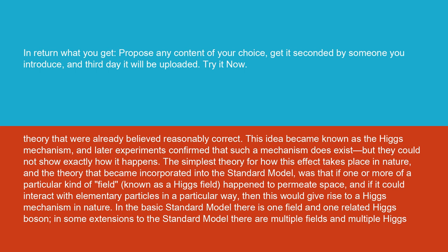The simplest theory for how this effect takes place in nature, and the theory that became incorporated into the standard model, was that if one or more of a particular kind of field, known as a Higgs field, happened to permeate space and could interact with elementary particles in a particular way, then this would give rise to a Higgs mechanism in nature.